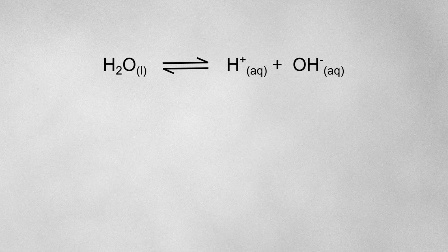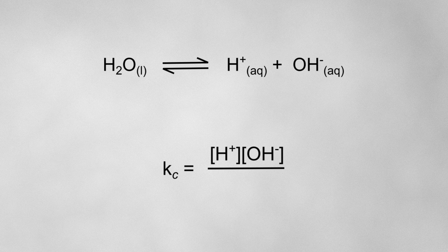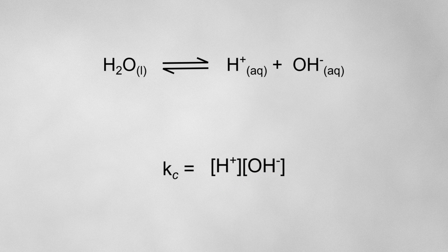Another specific example of Kc is for the equilibrium set up when water dissociates into its ions. Here, the equilibrium constant would be calculated by the concentration of H+ ions multiplied by the concentration of OH- ions, divided by the concentration of water. In this case, the concentration of water is in huge excess compared to the concentrations of the ions, so it's effectively a constant and can be ignored in the equation. This type of equilibrium constant, involving the dissociation of water, is also useful in a variety of calculations, so it has its own name: Kw, where the W stands for water.